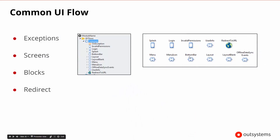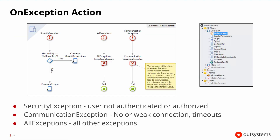There are some other common UI elements. If we opened up the common UI it would show us all these blocks and the ability to redirect to different URLs. But there are also three screens available: the splash screen, the login screen, and the invalid permission screen, as well as some exceptions. Those are also made available to us as part of the setup for our themes and templates.